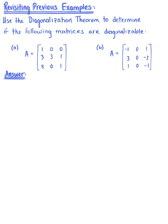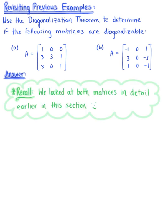Let's explore the diagonalization theorem by revisiting some examples we've previously seen in this section. We'll use the diagonalization theorem to determine if the following matrices are diagonalizable. Note that we actually looked at both of these matrices in explicit detail previously, so we're really just verifying our conclusions here.